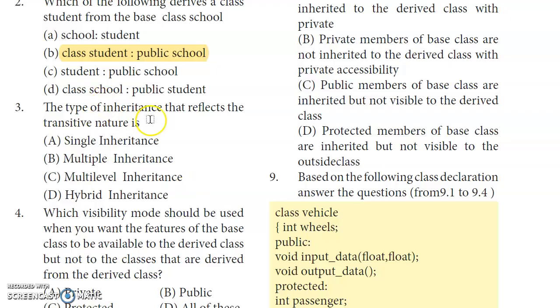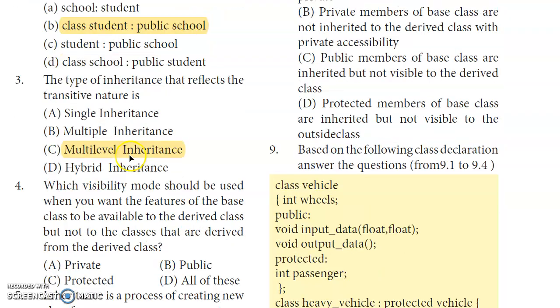Third question: The type of inheritance that reflects the transitive nature is — the answer is Multi-level Inheritance. Mark multi-level as the correct answer.